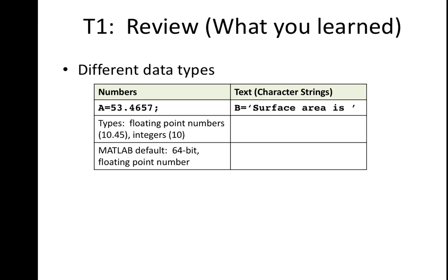So we also started to look at different data types. We really are going to be using two in this class. So the first type is what comes out as a default when you define a variable as a number. So if I say equals 53.4657, that data type that's going to by default be saved as is a floating point number. And that means that the decimal is included in the precision.